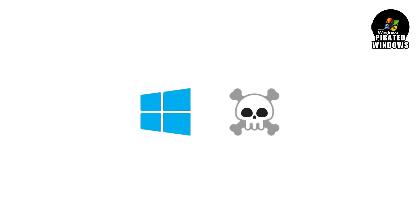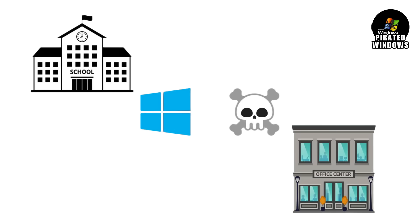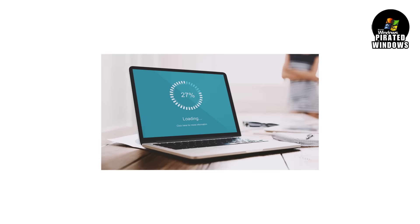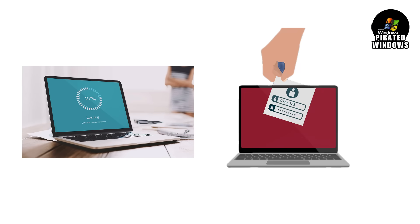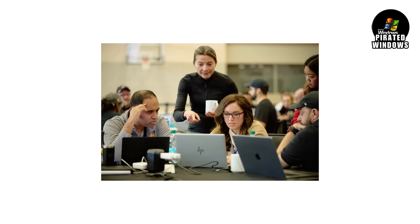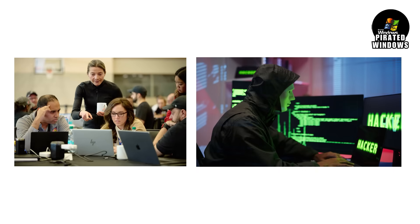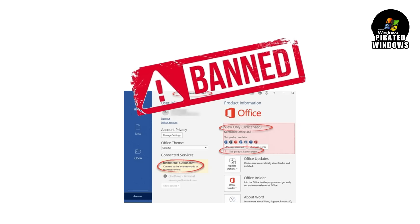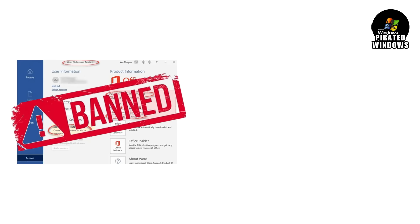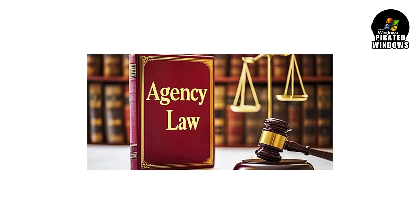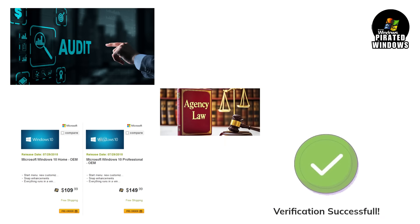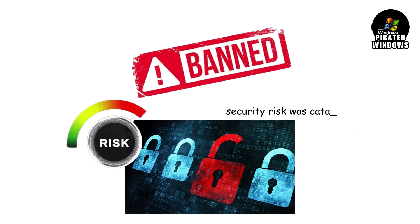Some of these builds found their way into schools, public offices, and even local government departments in certain regions. Systems slowed to a crawl, security breaches occurred, and IT teams discovered these machines weren't just pirated — they were compromised. As a result, several countries began officially banning the use of unlicensed or modified Windows builds in government institutions. Laws forced agencies to audit systems and migrate everything to verified, licensed versions. They weren't banning them for piracy — they were banning them because the security risk was catastrophic.